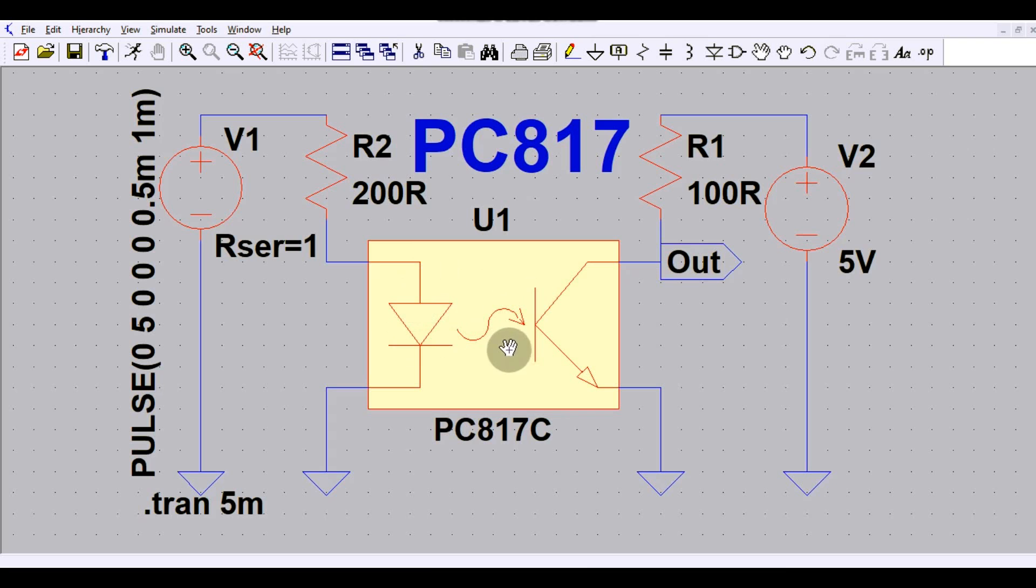This forms an optoisolator which gives an isolation 5 kV or whatever you want isolation between your primary side and your secondary side. Your high voltage area and your low voltage area or any other application.